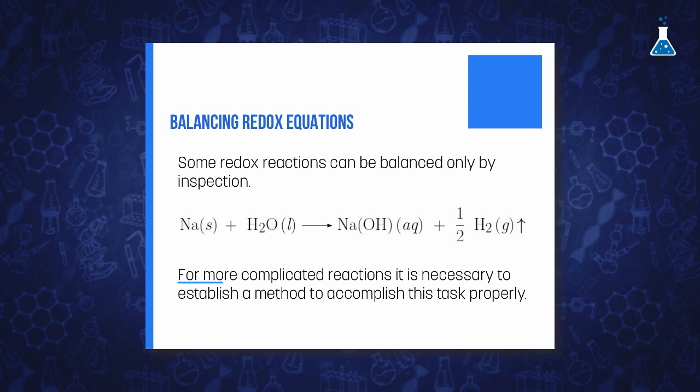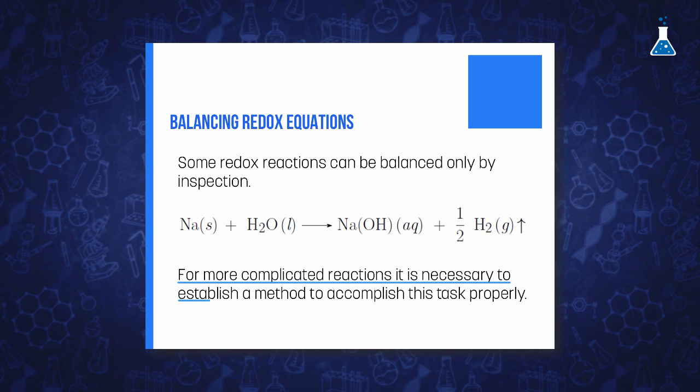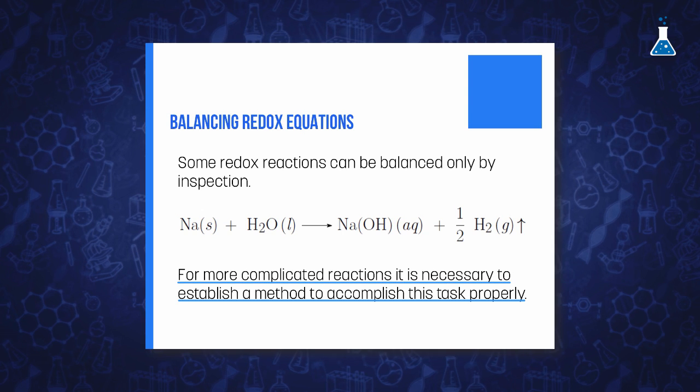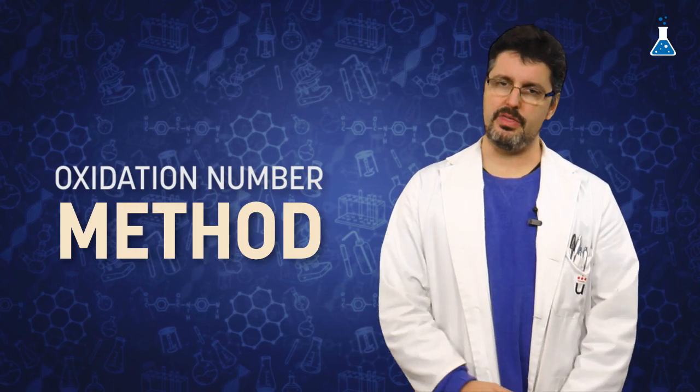However, for more complicated reactions, we should use a method that helps us to accomplish this task. A convenient method involves the employment of oxidation numbers to obtain a properly balanced equation. This method is known as oxidation number method, which is based on a set of rules that we need to apply.